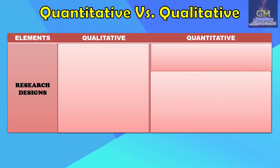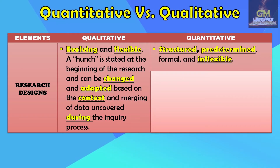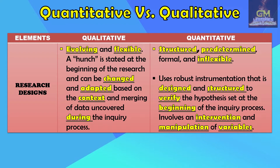With regard to research designs, qualitative research designs are seen to be evolving and flexible. A hunch stated at the beginning of the research can be changed and adapted based on the context and emerging data uncovered during the inquiry process. Whereas quantitative research designs are seen to be structured, predetermined, formal, and inflexible, using robust instrumentation designed to verify the hypothesis set at the beginning of the inquiry process, and involving an intervention and manipulation of variables.